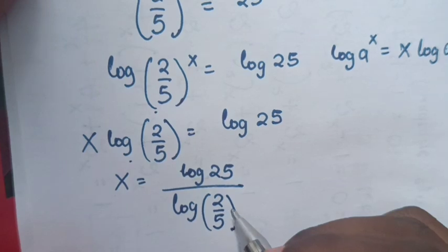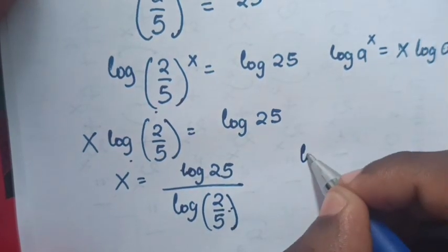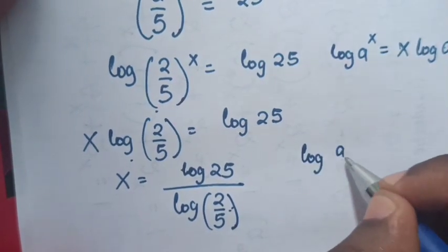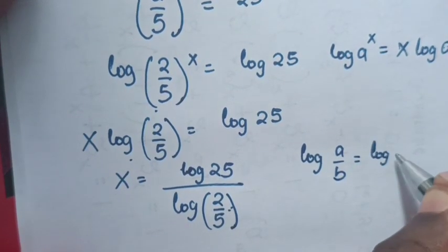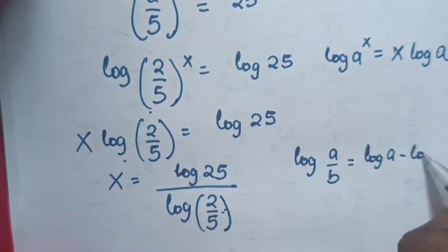Now from log 2 over 5, we use the formula that log a over b is equal to log a minus log b.